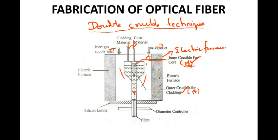You have an immediate outer crucible which is also made up of platinum, and it contains the cladding material. The setup is kept in an inert gas atmosphere in order to avoid unwanted reactions. The inert gas used is like argon or nitrogen.